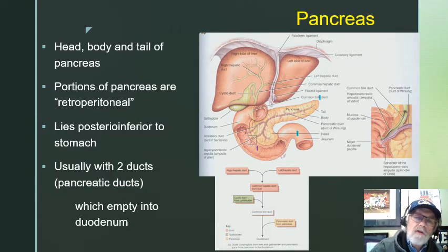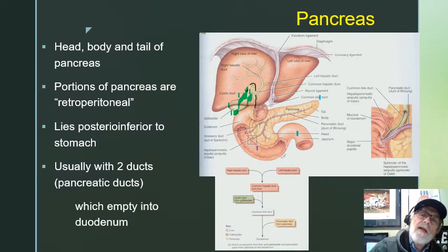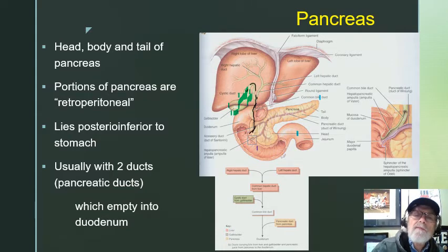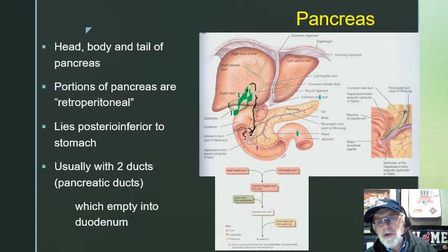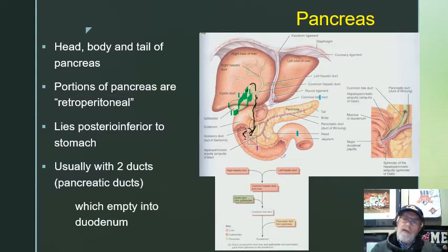If we look underneath the liver, here's the gallbladder. The gallbladder has a duct that comes out this way and comes down; it goes behind the pancreas and actually meets with the pancreatic duct. Most times, the duct that drains the gallbladder and the duct that drains the pancreas — with the bile from the gallbladder and the enzymes from the pancreas — they meet together and empty into the same spot in the duodenum.